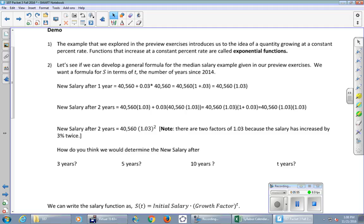Let's see if we can develop a general formula for the median salary. So let's give this a shot. This is going to be just mostly reading here. We started with forty thousand five sixty and we added three percent of forty thousand five sixty. But instead of just thinking of the number, we're going to start regrouping because it's going to help us in just a minute. What can you factor out of both terms? There's a plus sign in the middle. What can you factor out of both terms? Forty thousand five sixty. Right. It's in here and it's in here.